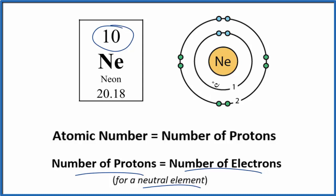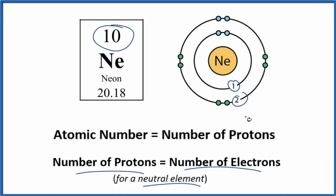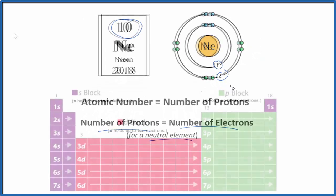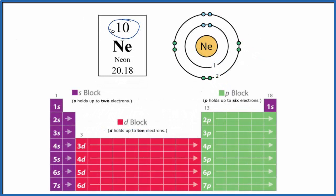What we want to do is figure out where these electrons are in the different energy levels. Neon has two energy levels. Let's use the periodic table to do that. So we said neon has 10 protons, since it's neutral, 10 electrons. So we go to the first period on the periodic table. This is the first energy level.